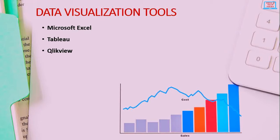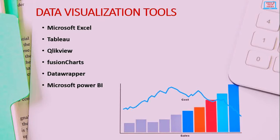ClickView is the second major player in the data visualization market, with more than 40,000 customers in over 100 countries, known for its customization capability and extensive features. Fusion Charts is a charting and data visualization software using JavaScript, capable of producing nearly 100 different types of charts. Data Wrapper is a favorite of the media industry, known for its ability to use CSV data for creating charts and maps. Microsoft Power BI is a data visualization tool by Microsoft with a free downloadable version. Google Data Studio is offered by Google as part of the Google Marketing Platform.